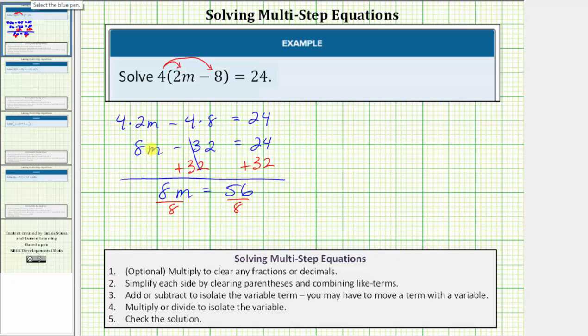Now we simplify both sides. Eight divided by eight is equal to one. One times m is m. 56 divided by eight is equal to seven. The solution is m equals seven.